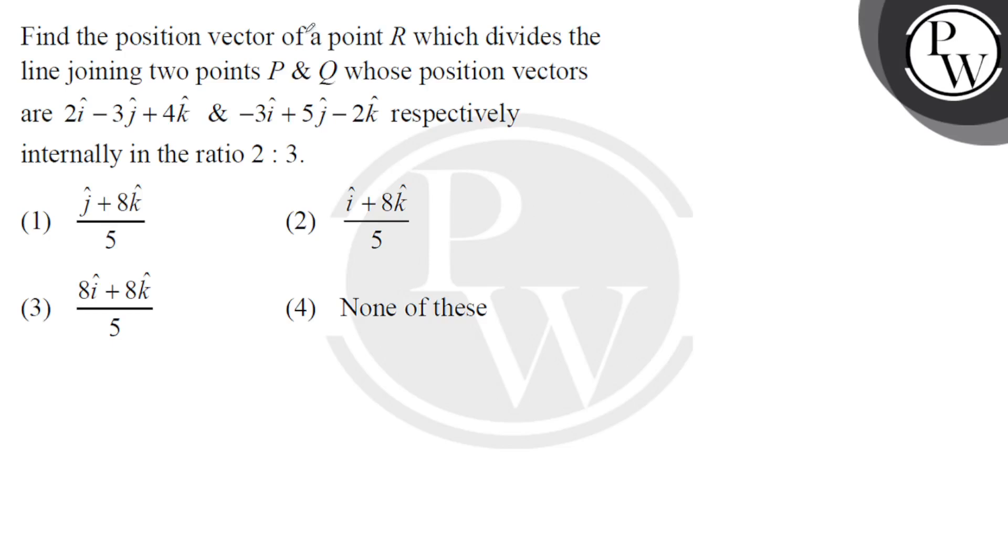Hello, here we have a question to find the position vector of a point R which divides the line joining the two points P and Q whose position vectors are given, and we divide internally in the ratio 2 to 3.